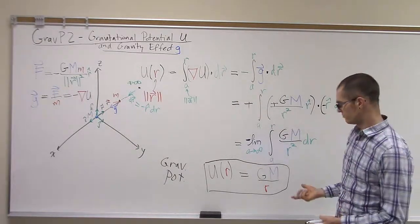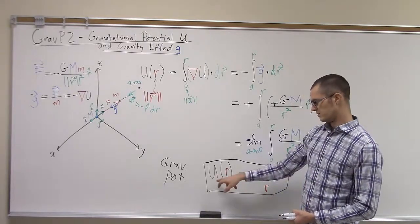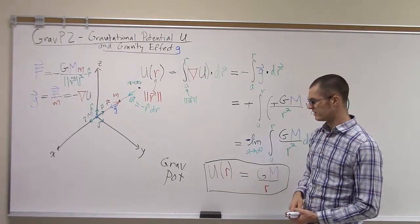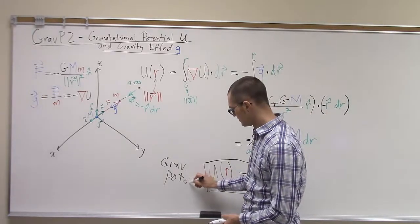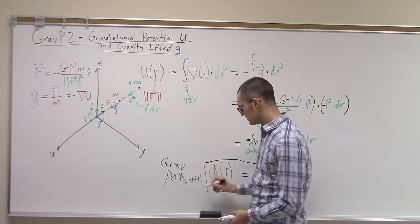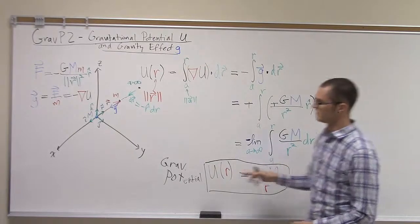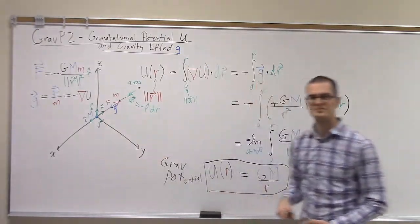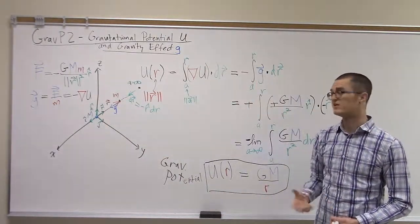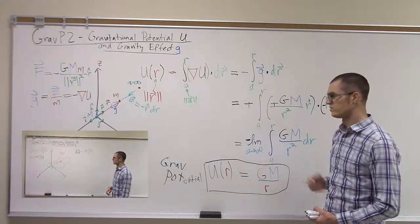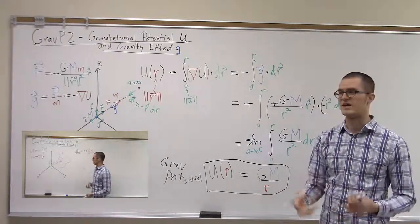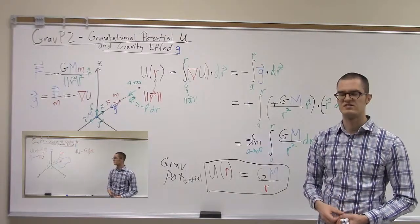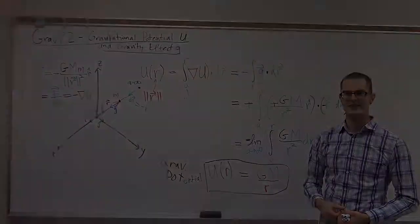So in this video, we defined what is the scalar gravitational potential field for a point mass at the origin m here. In the next video of this sequence, we'll look at how do we actually work this out for an arbitrarily shaped object that might have variations in mass over it, or variations in density. Thank you.